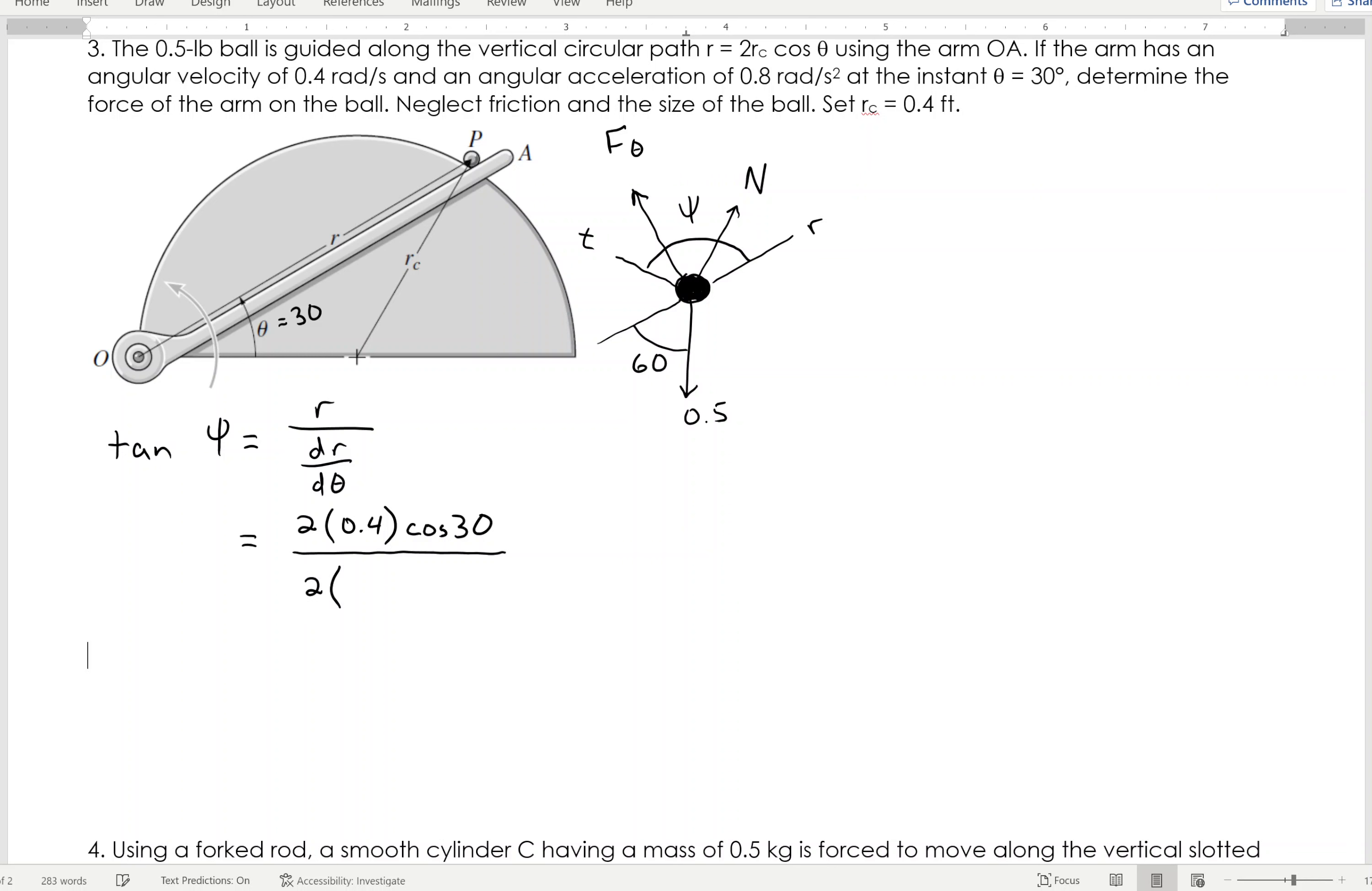The derivative of R is just going to be 2 times that R 0.4, but now I'm going, instead of cosine, I'm going to go sine, and it goes negative when I take the derivative. Now, I'm not doing a time derivative. This is derivative with respect to theta. So, this just goes from cosine to negative sine, like so.